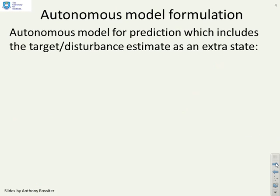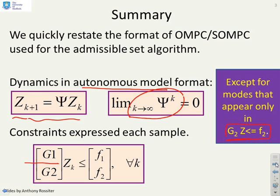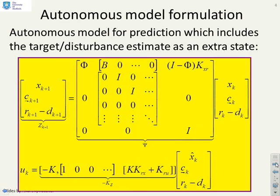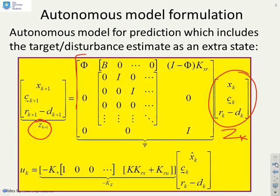With the constraint set, we split it into two parts: the part which you had to sample — ensuring it at every sample — and the part that you only had to ensure at k equals zero. The autonomous model formulation defines z, and you can very easily find the relationship between z_{k+1} and z_k, writing down the expressions using the simple state transition psi.